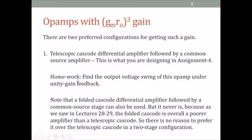One homework I am giving you is for this two-stage op-amp with a telescopic cascode first stage. If you short the output to the negative input — put it in unity gain feedback — then find the output voltage swing of the op-amp. You have done enough swing calculations that you should be able to do this on your own.